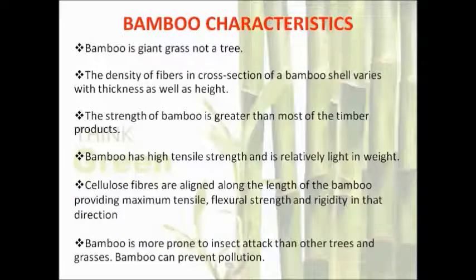Bamboo characteristics: Bamboo is a giant grass, not a tree. The density of the fibre in the cross section of bamboo cells varies within the thickness as well as its height. The strength of bamboo is greater than most timber products. It has high tensile strength and is relatively light in weight. The cellulose fibres aligned along the length of the bamboo provide maximum tensile strength, flexural strength, and rigidity in that direction. Bamboo is more prone to insect attack than other trees and grasses, but it can also help prevent pollution.